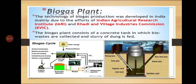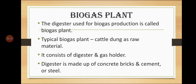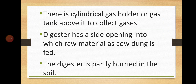The digester used for biogas production is called a biogas plant. A typical biogas plant uses cattle dung as raw material. It consists of a digester and a gas holder. The digester is made up of concrete bricks, cement, or steel, and is partly buried in the soil. There is a cylindrical gas holder above the digester to collect the gases.